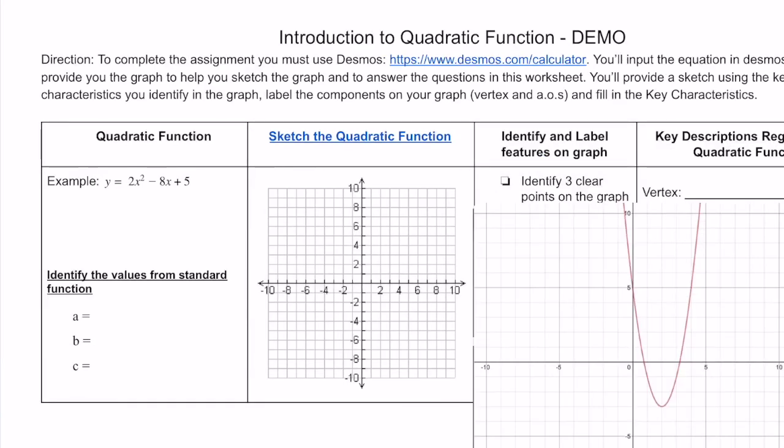Notice that the first direction asks us to identify the values from the standard function. Remember, a standard equation is written as ax² plus bx plus c. The 2 is in front of the x squared, so a is 2, b is negative 8, and c is 5.